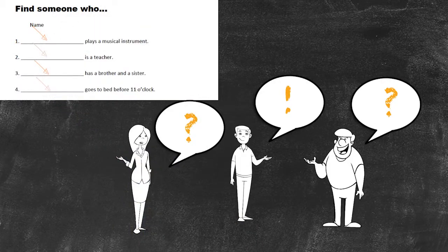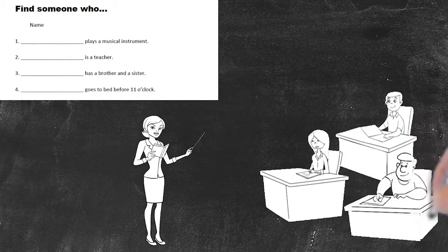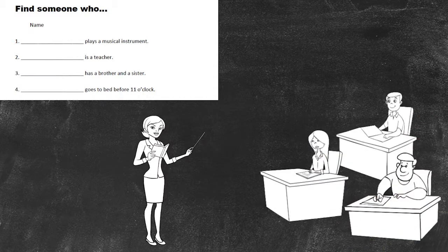The students will mill around the room for generally five to eight minutes, depending on your timing of your class. When the teacher feels it's appropriate, he'll have the students sit down and begin feedback.